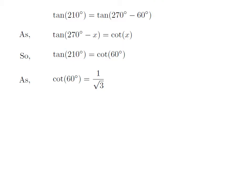We know the value of cotangent of 60 degrees is equal to 1 upon square root of 3. So the value of tangent of 210 degrees is equal to 1 upon square root of 3.